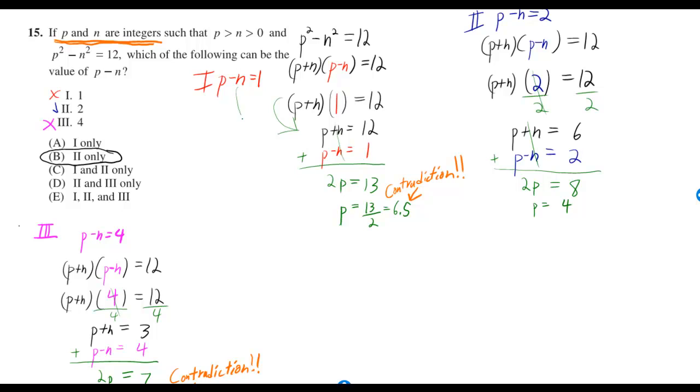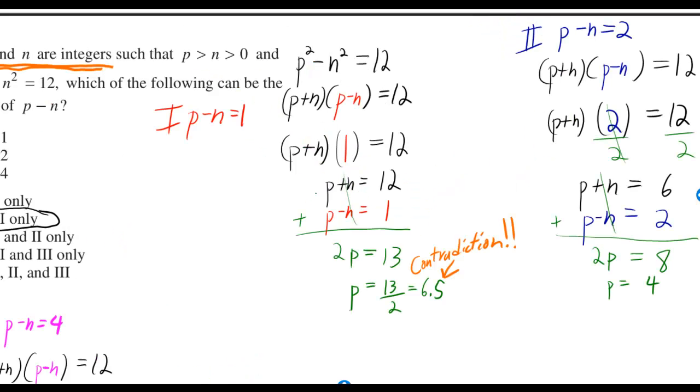But remember, I also have this other equation, p minus n is equal to 1. So I put them both down there, and then I add up the two equations. And if I add the two equations, I get 2p. The n and the minus n, they cancel. But when I add the two right sides, I get 13.